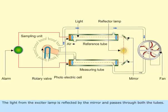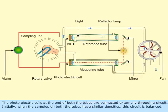The light from the exciter lamp is reflected by the mirror and passes through both the tubes. The photoelectric cells at the end of both the tubes are connected externally through a circuit.